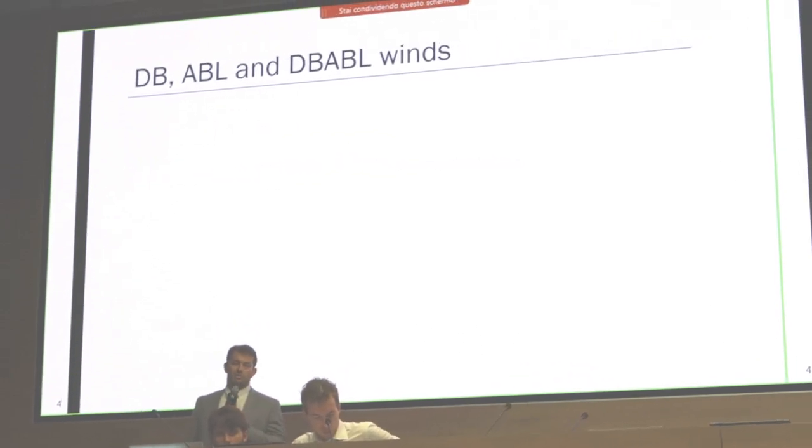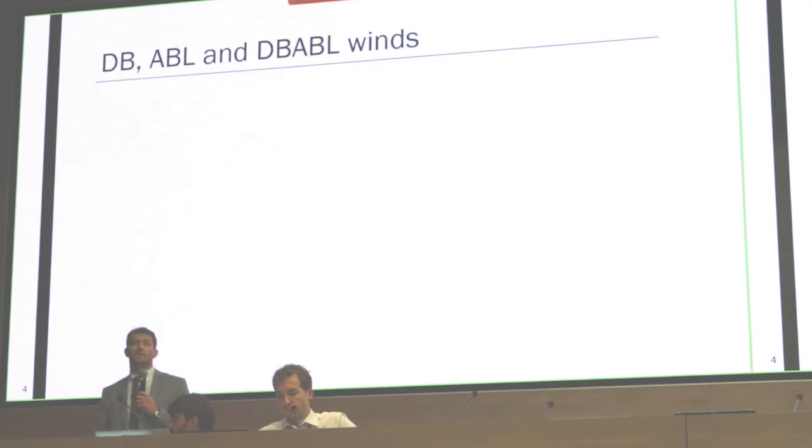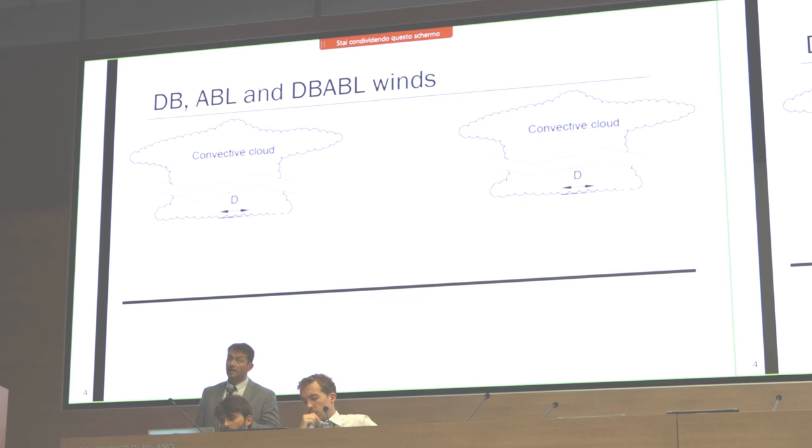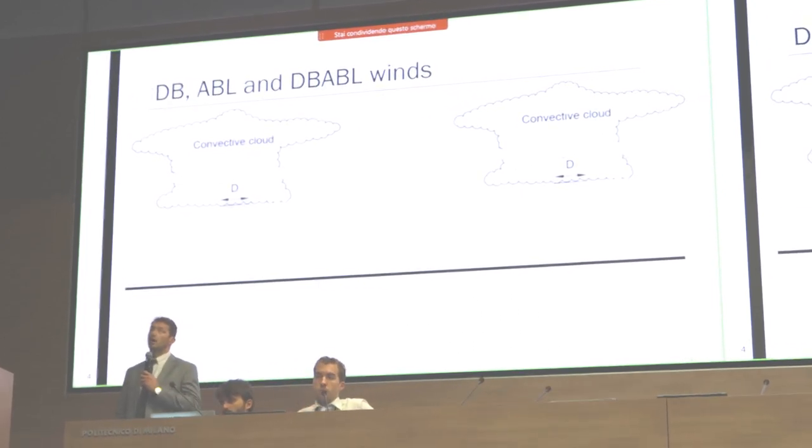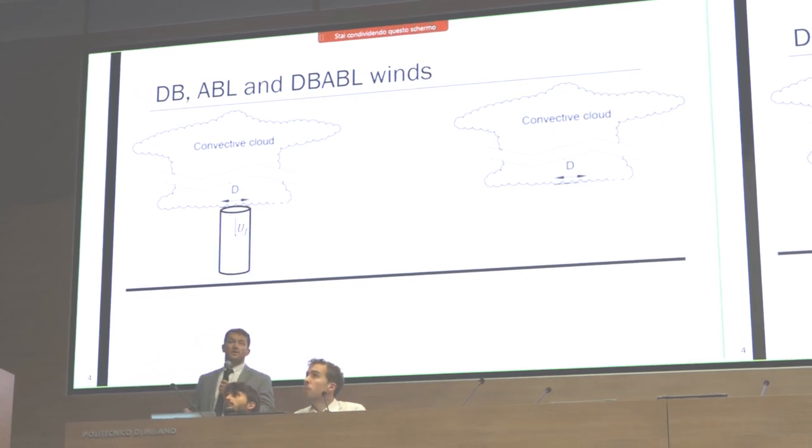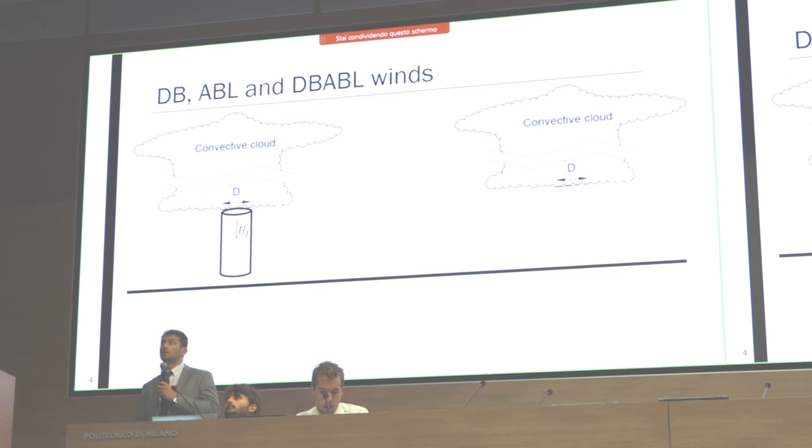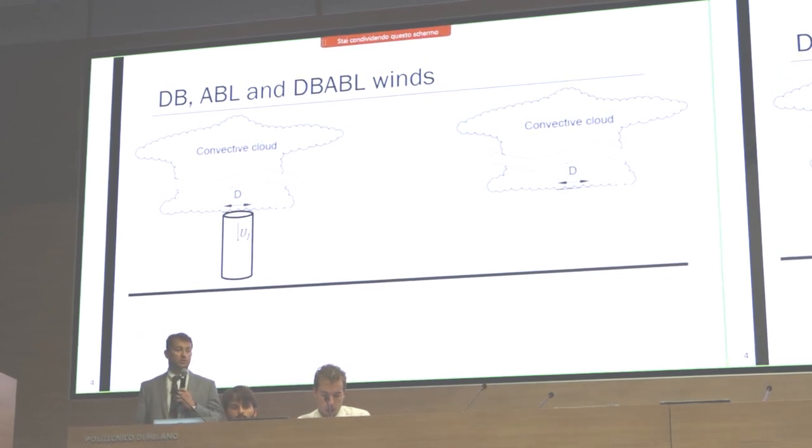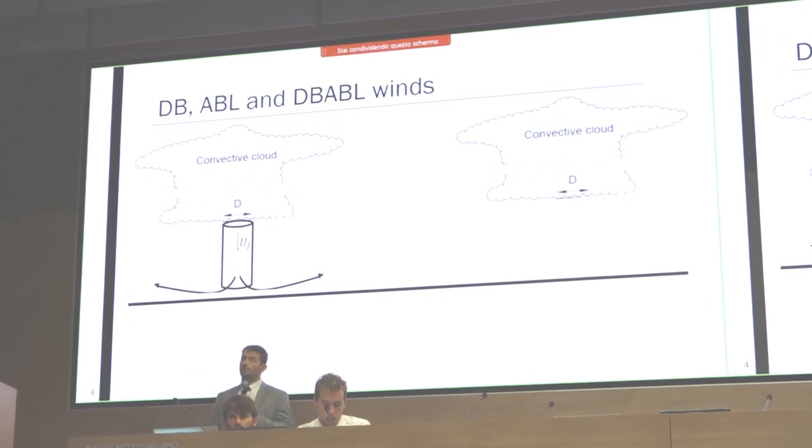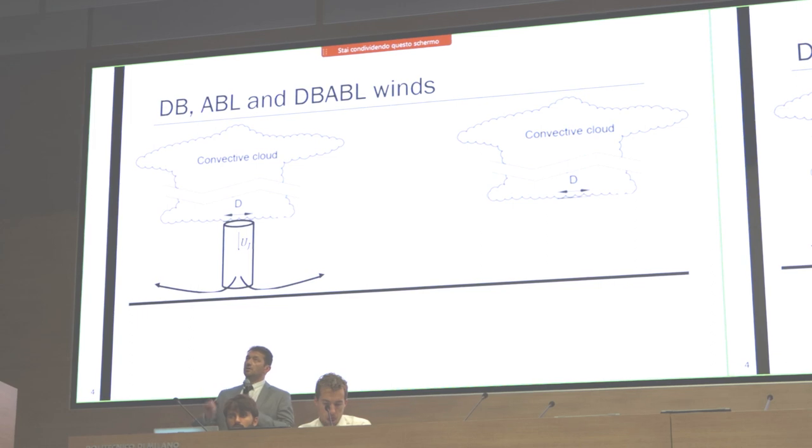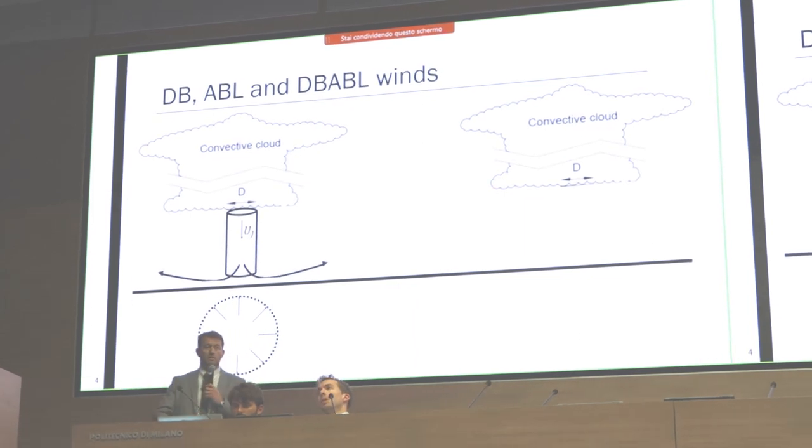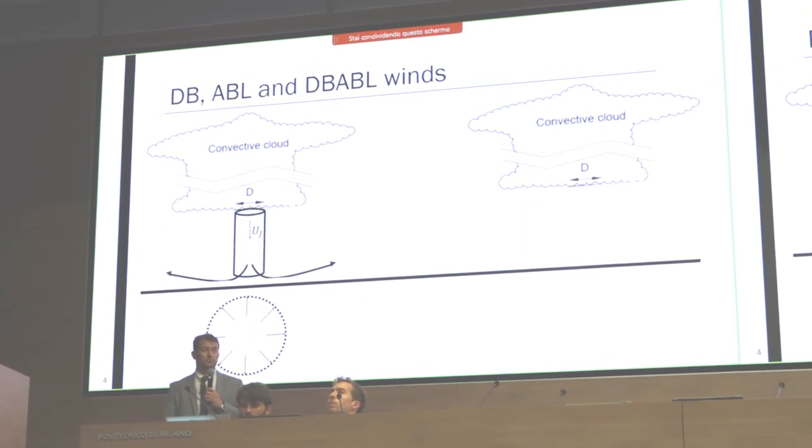I'm not going to talk too much about downbursts and ABL winds because previous speakers covered that excellently, but I'll highlight some differences. If we have a convective cloud and there's a downdraft of negatively buoyant air hitting the surface, in the absence of cloud motion and ABL winds, we'll have radial outflow. This is what we call DB outflow. Uj is the maximum velocity in the center line of this downdraft, and if we look into any vertical plane, the outflow should be symmetric.